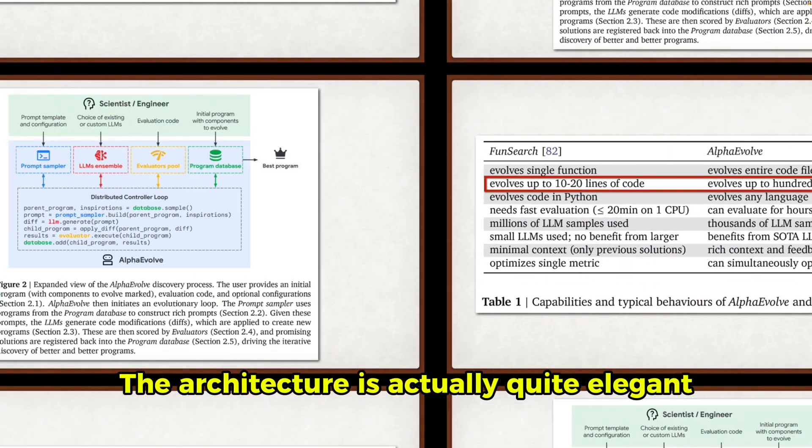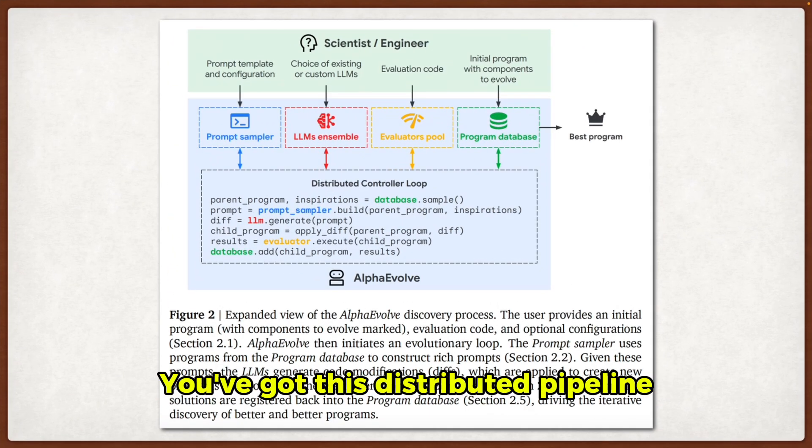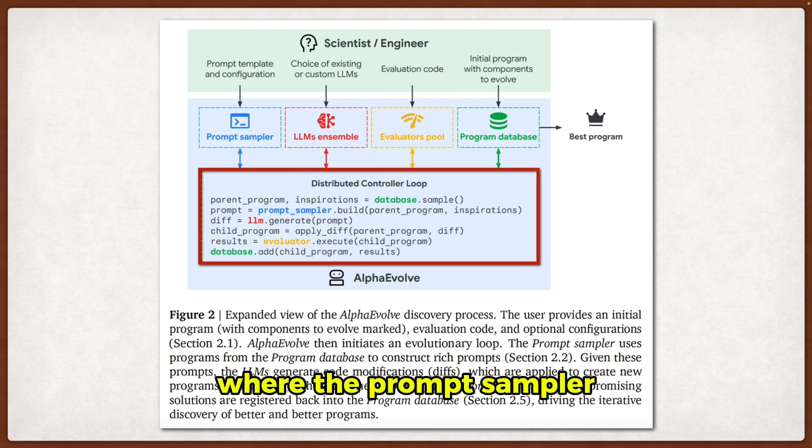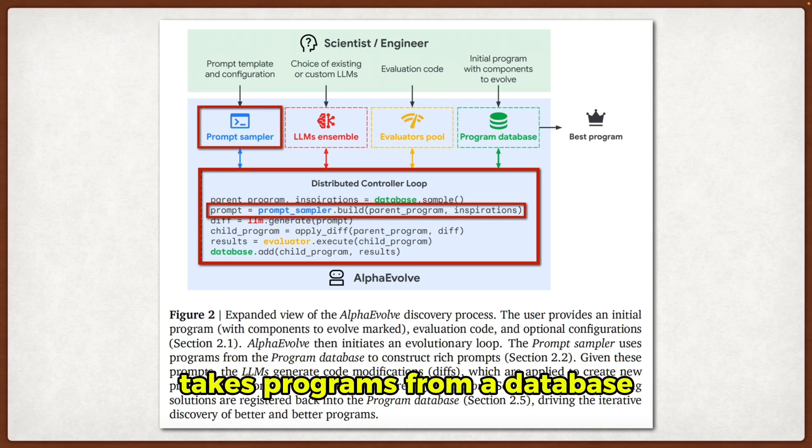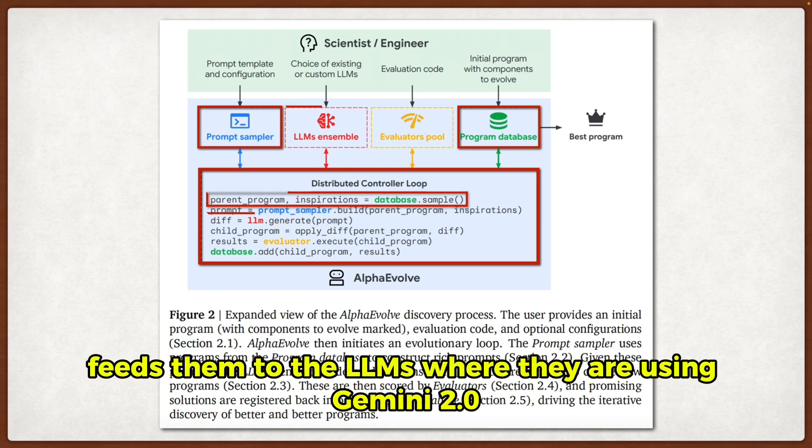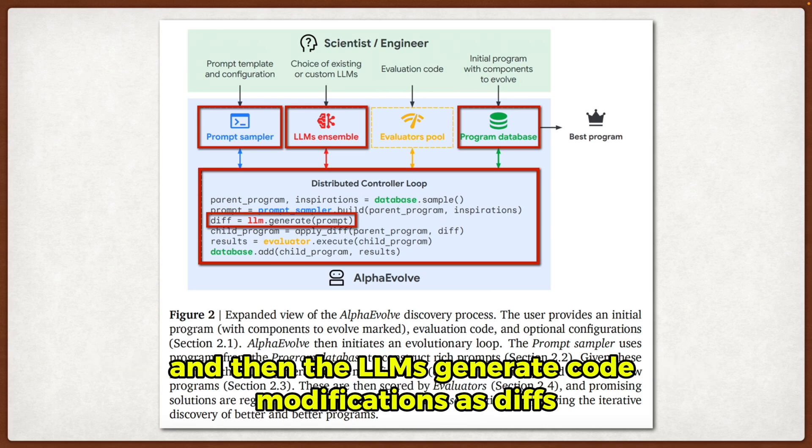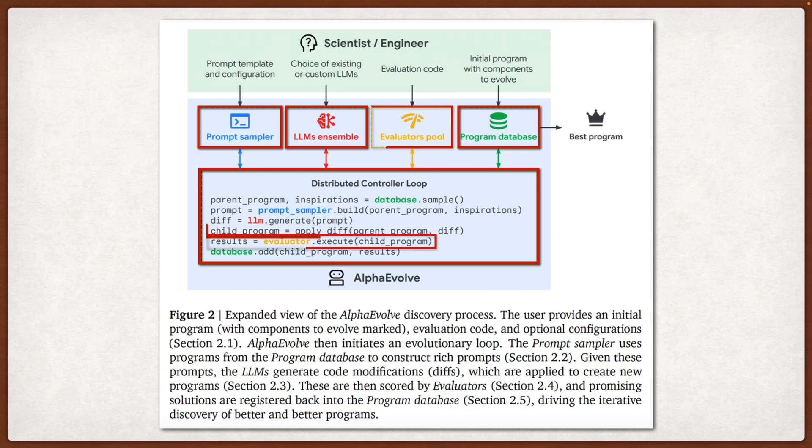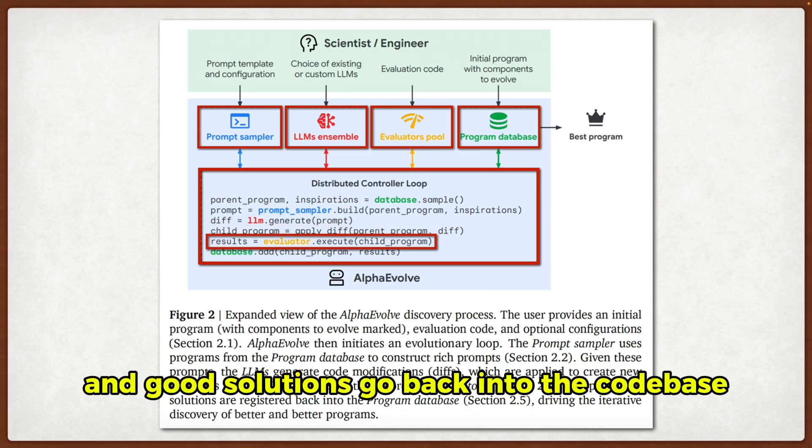The architecture is actually quite elegant. You've got this distributed pipeline, where the prompt sampler takes programs from a database, builds rich prompts with context and previous solutions, feeds them to the LLMs, where they are using Gemini 2.0 Flash and Pro, and then the LLMs generate code modifications as diffs. These results get evaluated and good solutions go back into the codebase.